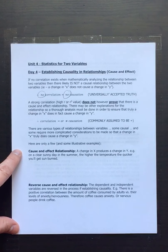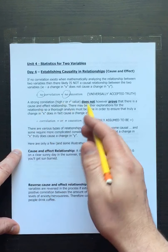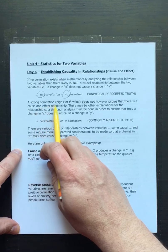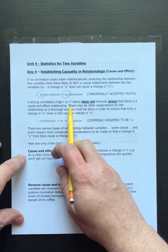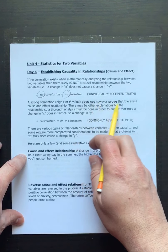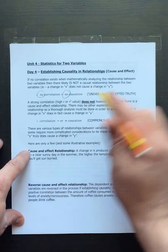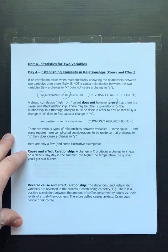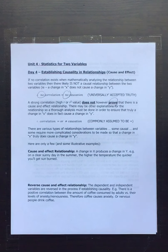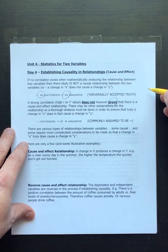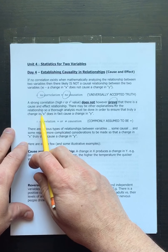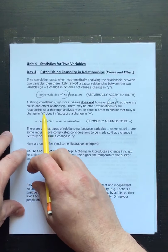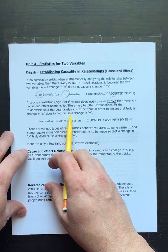Here's where it gets a little fuzzy: a strong correlation — a higher r value, or r-squared value for a non-linear correlation — does not prove that there is a cause-and-effect relationship. It doesn't prove it; it only suggests it may exist. There may be other explanations for why x changes along with y.